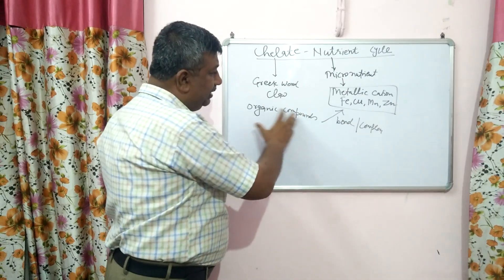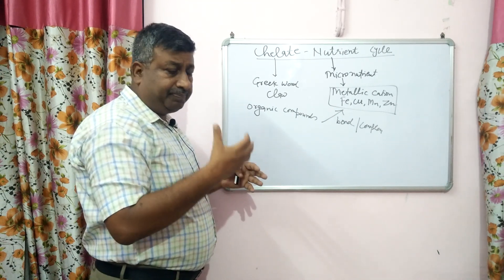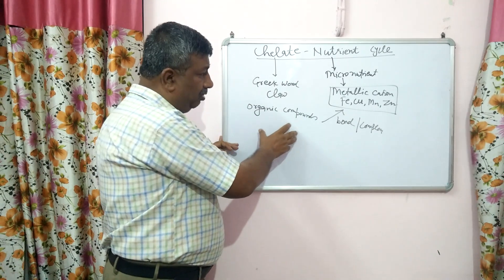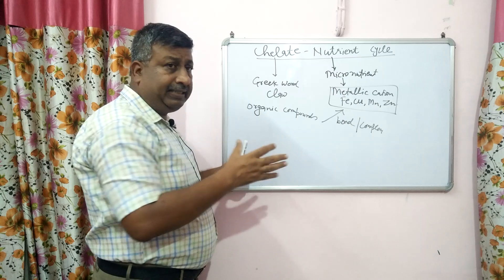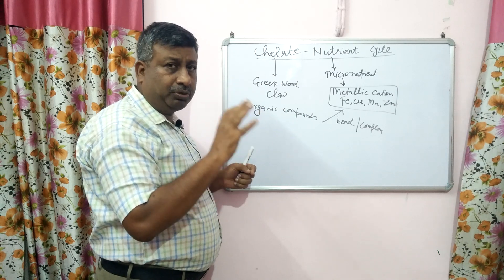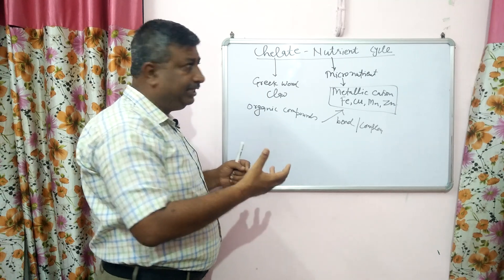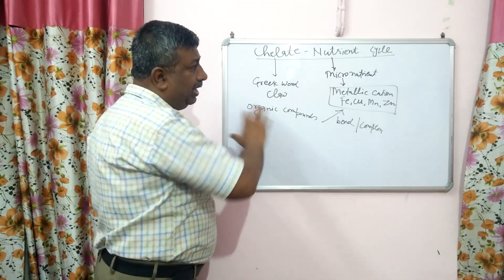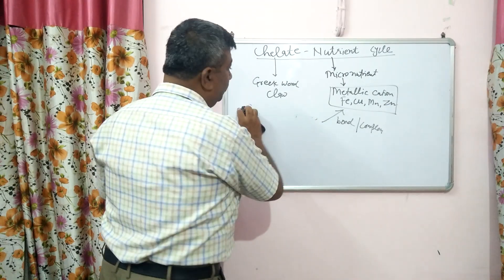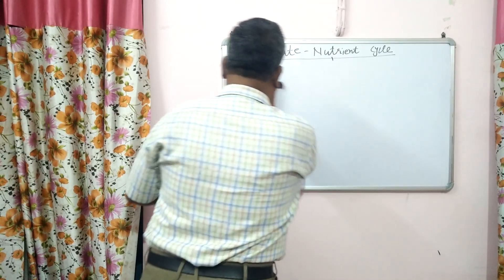But if these metallic cations make a bond or complex with organic compounds, then there is no precipitation, no insoluble compound formation, and no adsorption. This compound is soluble, and the chelate-metal complex moves towards the root through diffusion. It releases the nutrient at the root surface and availability is increased. This is known as the chelate nutrient cycle.